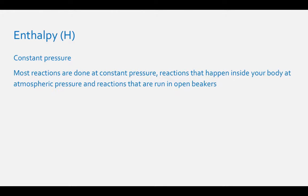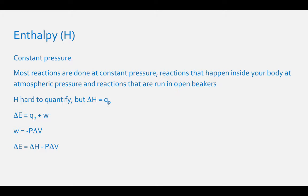Enthalpy, H, of a system needs to be taken into account when running a reaction at constant pressure. Most reactions are run at constant pressure, including reactions inside your body and reactions run in open beakers. Enthalpy is hard to quantify, but change in enthalpy is easy because it equals the heat that is lost or gained by a system at constant pressure. The equation for enthalpy is related to internal energy: ΔE = q + w. Since work equals negative pressure times change in volume, substituting gives delta E equals delta H minus P times delta V, or delta H equals delta E plus P times delta V.